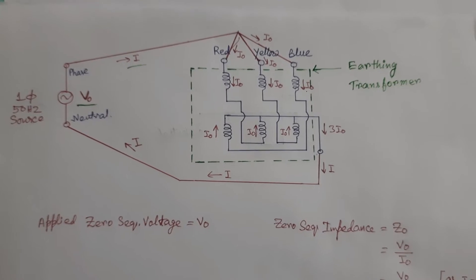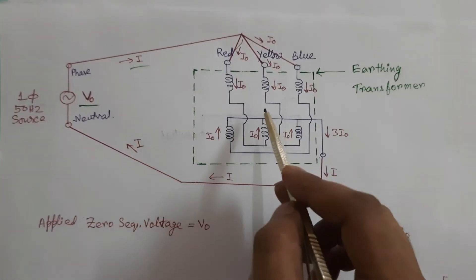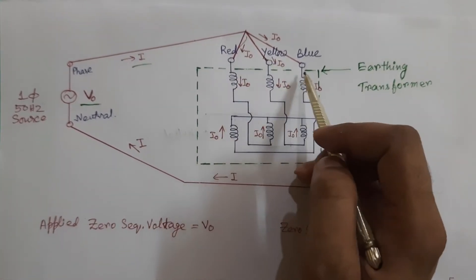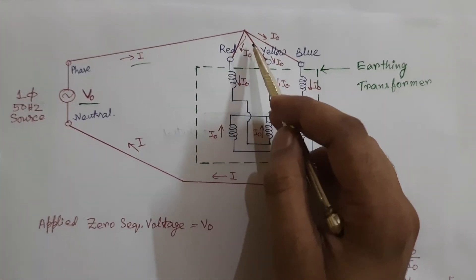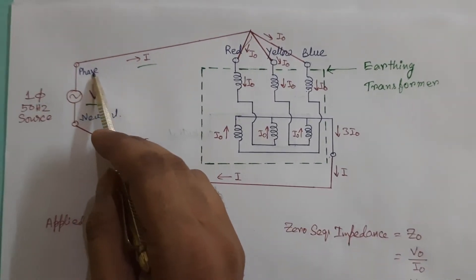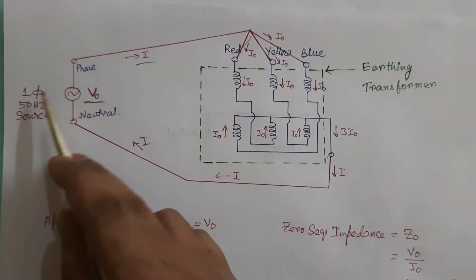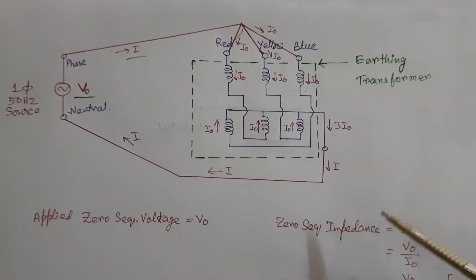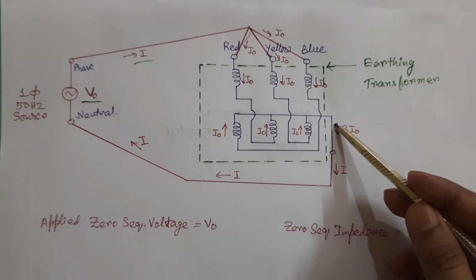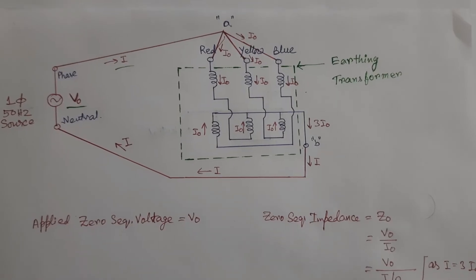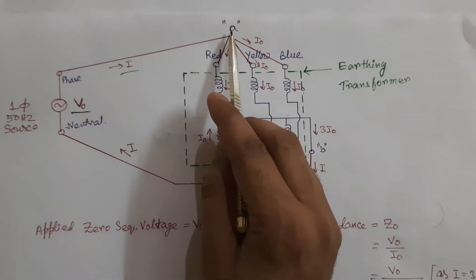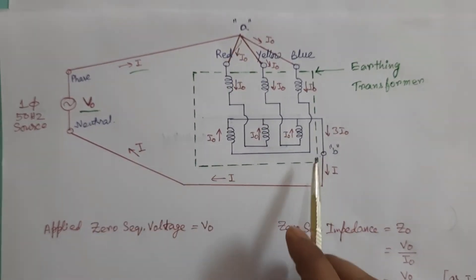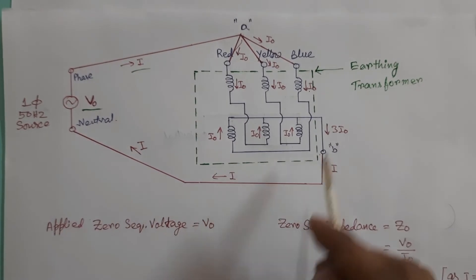then we can say that we have applied a zero sequence voltage to this earthing transformer because red, yellow and blue phase are shorted and that is connected with phase of this single-phase source and neutral of this single-phase source is connected with neutral of this earthing transformer. That means we can say that a zero sequence voltage is applied between terminal A and terminal B of this circuit.